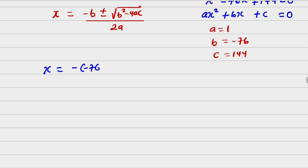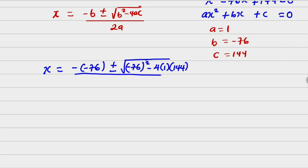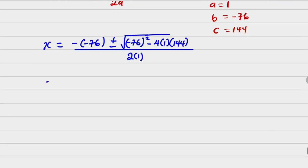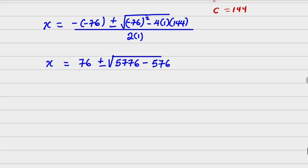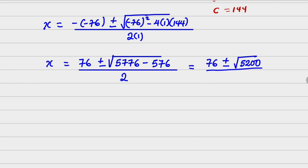Applying the quadratic formula, x = [−(−76) ± √((−76)² − 4 × 1 × 144)] / (2 × 1). This gives x = 76 ± √(5776 − 576) all over 2, which simplifies to x = 76 ± √5200 all over 2.